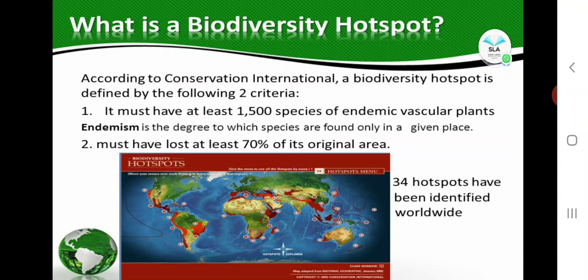It must have at least 1,500 species of endemic vascular plants. Endemism is the degree to which species are found only in a given place — a particular area where animals and plants and their adaptations are found exclusively. Endemic species are those 1,500 species of vascular plants found only in that region. It must have lost at least 70% of its original area.